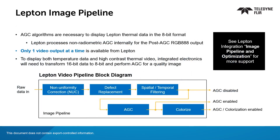If the AGC is done on the camera, the post-AGC RGB 888 output comes from the camera. Use it for designs that do not require radiometry and only need to display contrast in the scene. Only one video output is available from the camera, so if both temperature data and high contrast video are required, AGC will be done by the integrator's platform.